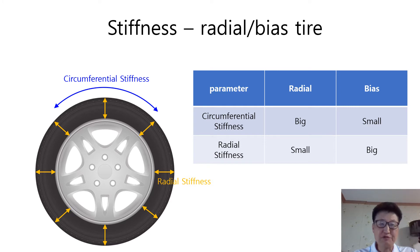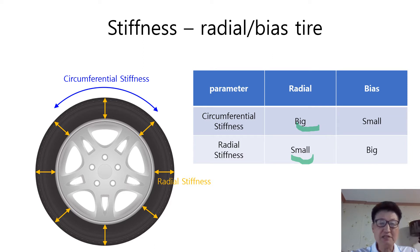Thanks to their structure characteristics, radial tire has big circumferential stiffness and small radial stiffness. Therefore, radial tire limits the change in the circumferential length, and with this result, there is no big change in the effective rolling radius. On the other hand, bias tire has big radial stiffness and small circumferential stiffness. With this result, bias tire is flexible in the circumferential length and can allow easy change in the circumferential length compared with radial tire.